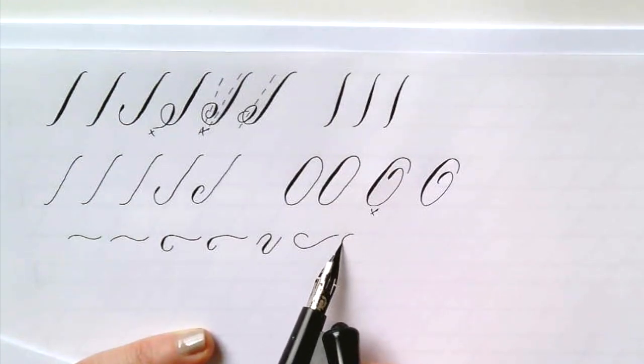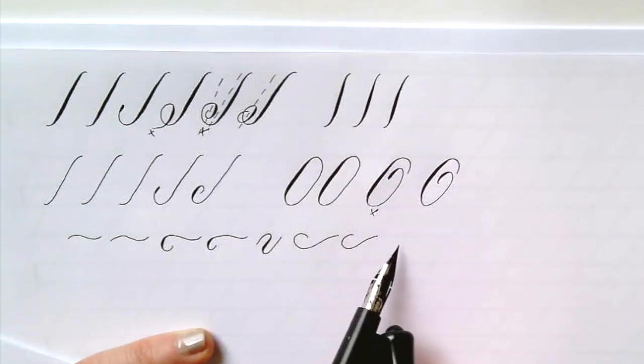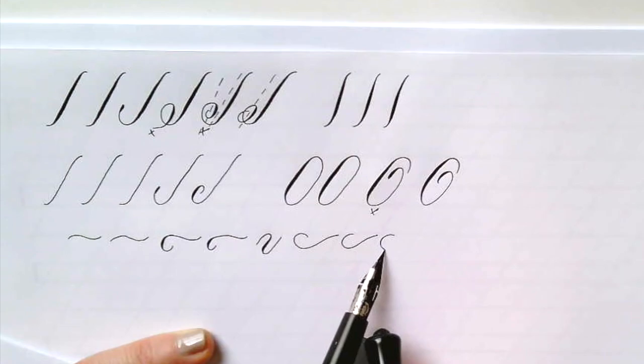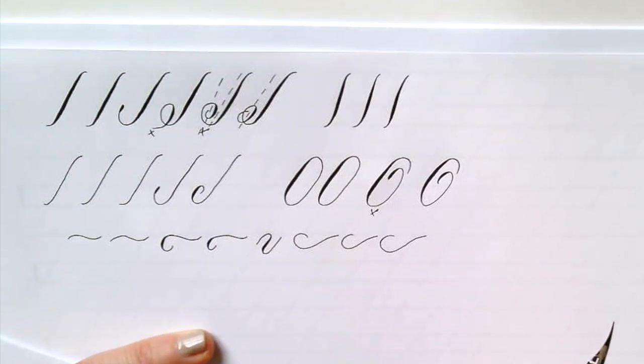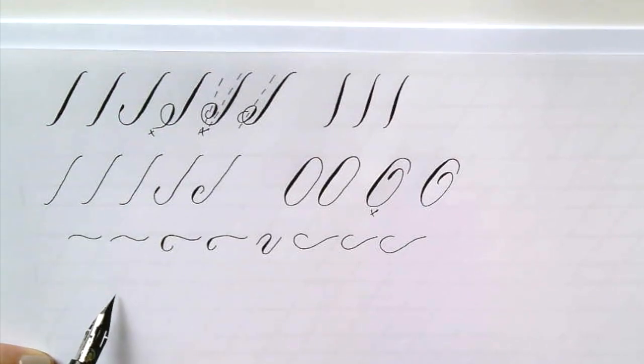So I'm demonstrating here an in-stroke variety for the compound curve or a little fish hook—these are very light lines. You can think of them as a fish hook, or maybe half a heart if you think the ascender line is the mirror space and you do half a heart.